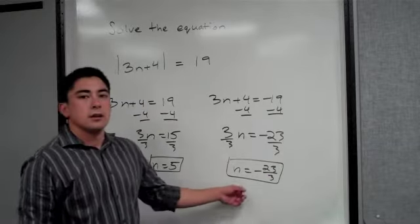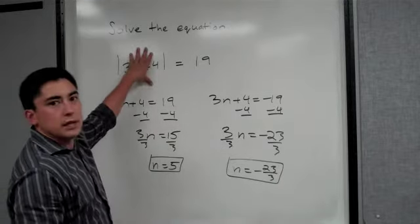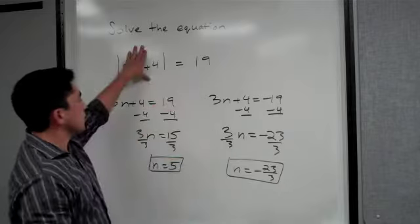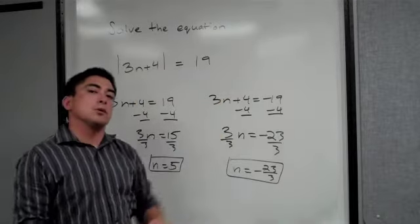n is equal to negative 23 over 3. So again, you have two answers here. If you plug it in, they both work. This one, if you plug it in, will end up being 19. This one, you plug it in, ends up being negative 19. Therefore, when you take the absolute value of both, they both equal 19.